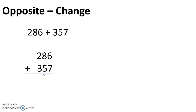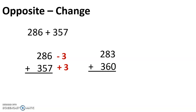Now let's say we choose to adjust the 357. Let's bump it up to say 360. We would have to add 3, but what we do there, we've got to do the opposite. So let's subtract 3 from the 286. So that's going to give us a new problem of 283 plus the 360.